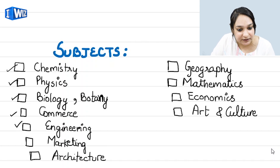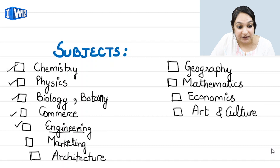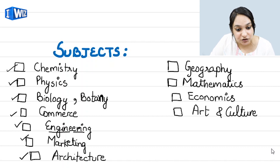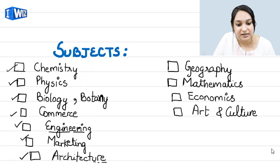After that comes marketing, then architecture — remember, this is a peculiar spelling, don't write it incorrectly. After 'architect', you write 'u-r-e' — architecture. Then comes geography, mathematics. If you hear 'mathematics' in the audio, try to write 'mathematics'. In case you feel unsure about the spelling, you can write 'maths' instead.